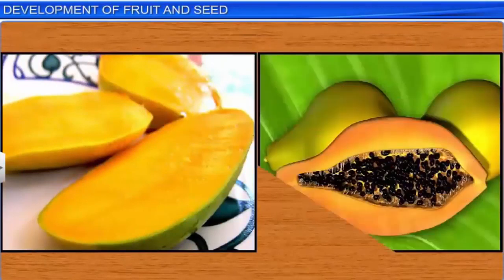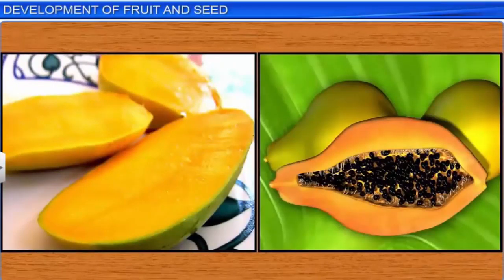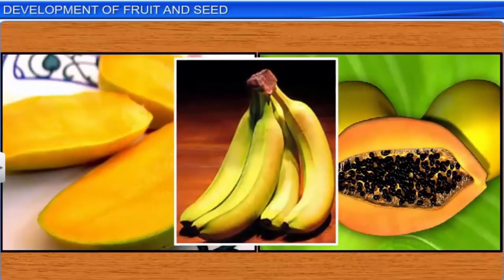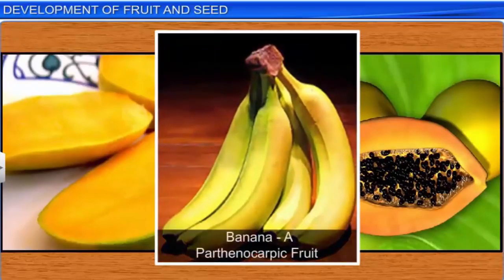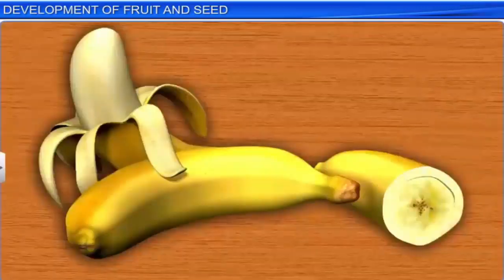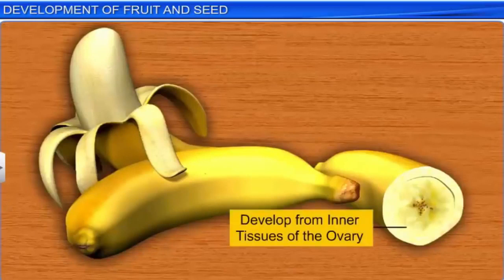On the other hand, fruit like mango and papaya that develop only from the ovary are called true fruit. Interestingly, while mango and papaya develop after fertilization, fruit like banana develop without fertilization and are called parthenocarpic fruit. Moreover, in the case of banana, the edible parts develop from the inner tissues of the ovary, and the brown specks that we see are the remnants of the ovules.